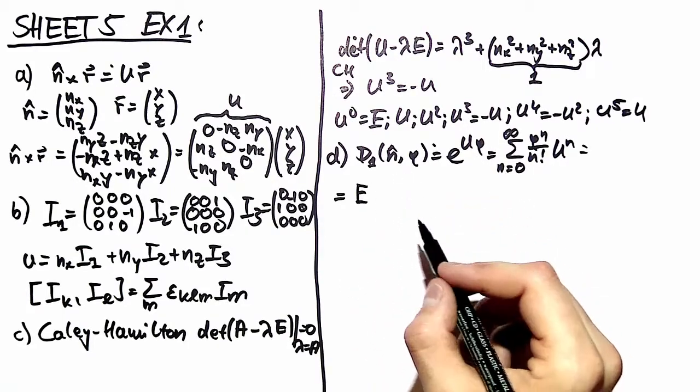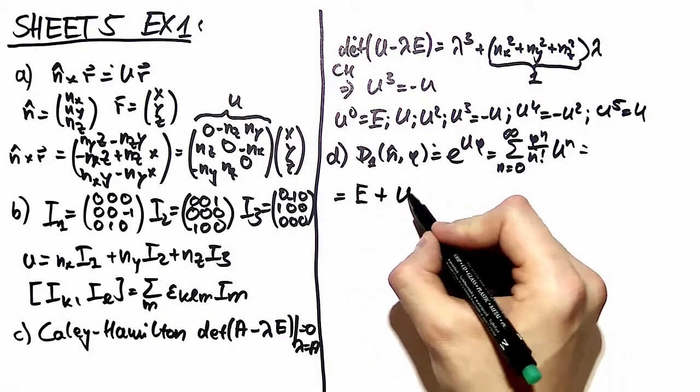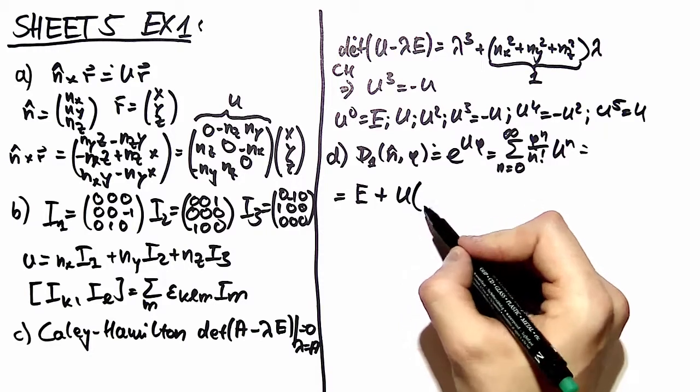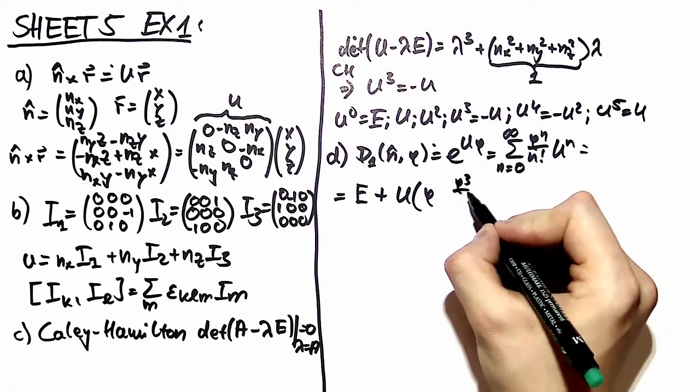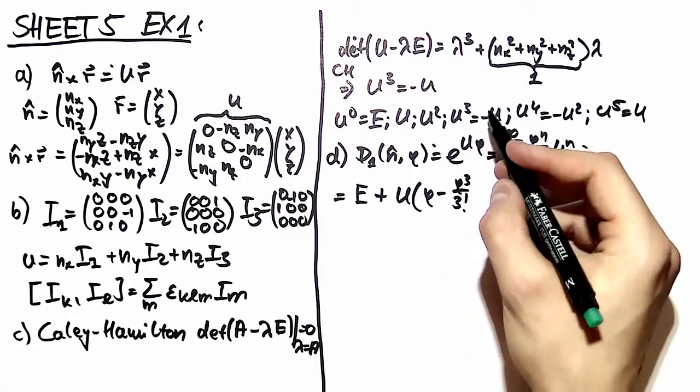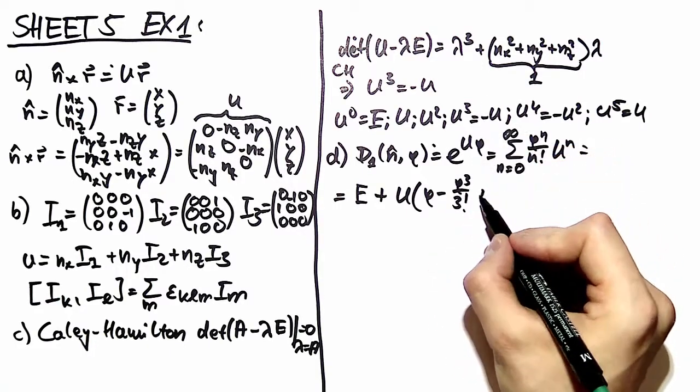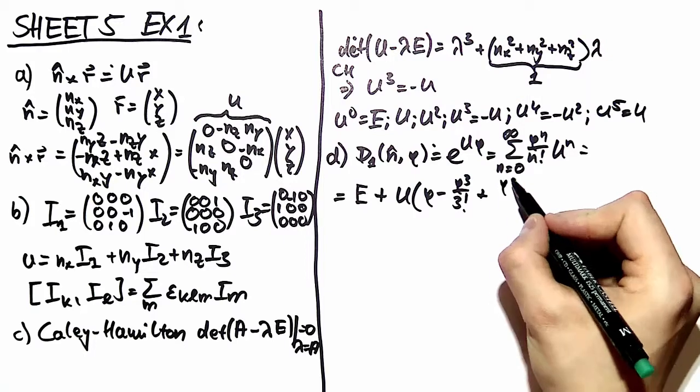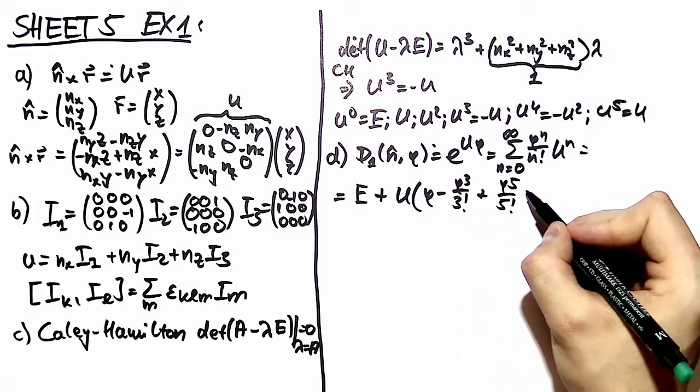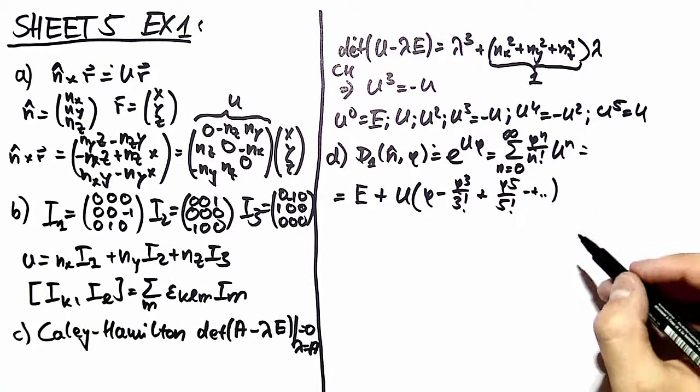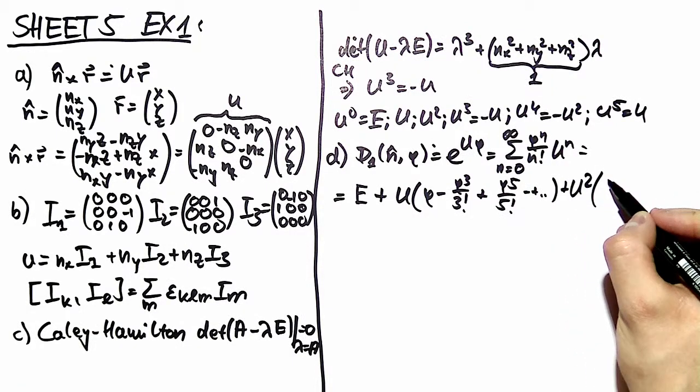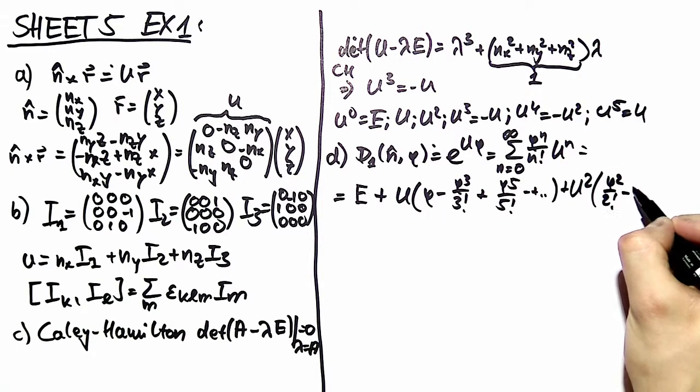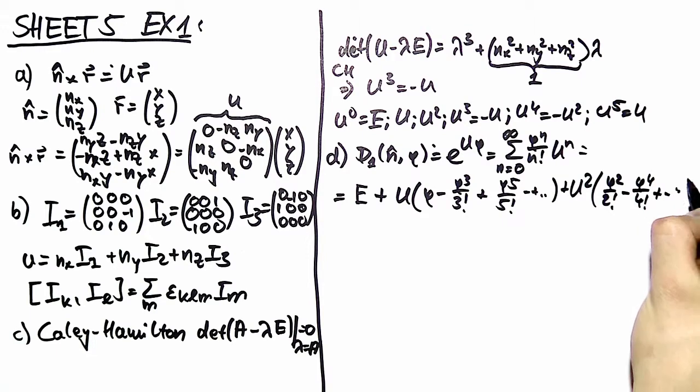First of all, you have the identity matrix, which occurs only once. Then you have the matrix u, which occurs the first time with phi. And then again with phi to the third over three factorial. But here you have a minus sign because of this relation. Then again it occurs with phi to the fifth over five factorial. And you have a plus again. So you have minus, plus, and so on. And the same is true for u squared. Here you have phi squared over two factorial minus phi to the fourth over four factorial plus minus and so on.